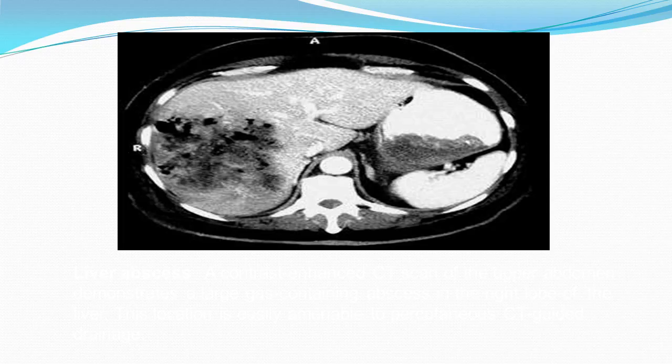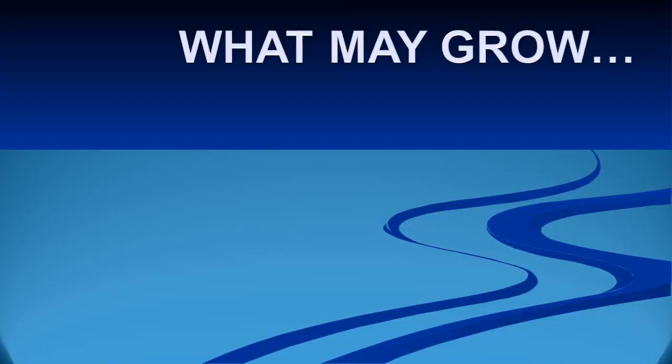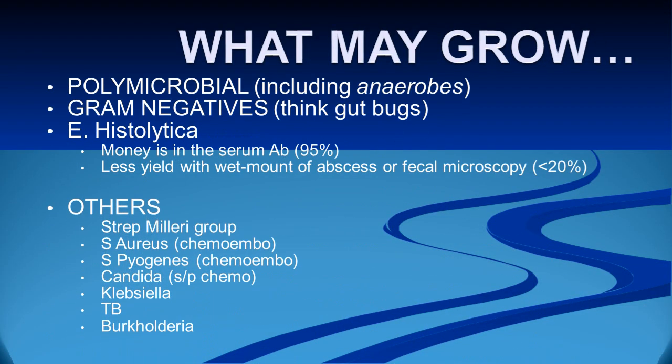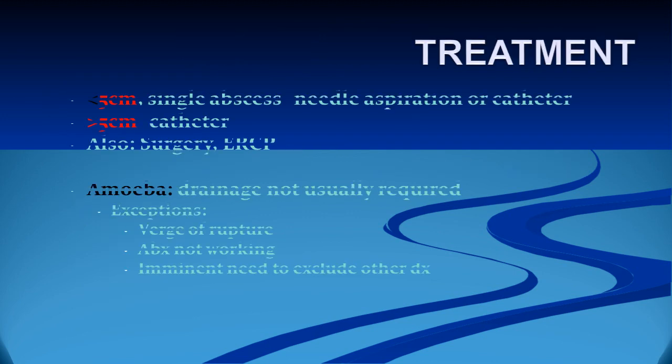CT scan can demonstrate the liver abscess. Common organisms include polymicrobial gram-negatives, Entamoeba histolytica, Streptococcus milleri, Streptococcus pyogenes, Candida, Klebsiella, TB, and Burkholderia. Management is size-based: for abscesses under five centimeters, needle aspiration or catheter drainage is used; for those over five centimeters, catheter drainage, surgery, or ERCP drainage may be attempted. Amoebic abscess drainage is not usually required; treatment with metronidazole is the mainstay, with surgery reserved for impending rupture, antibiotic failure, or need to exclude other diagnoses.